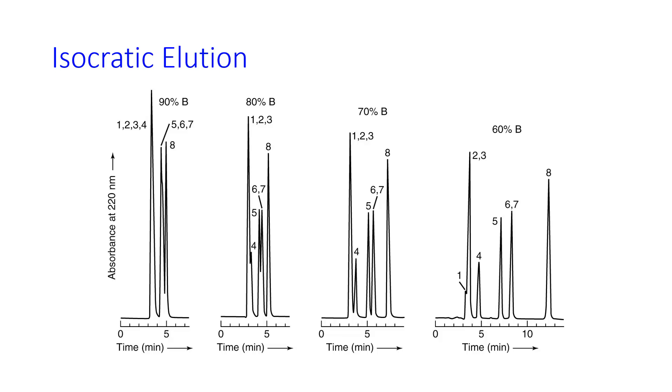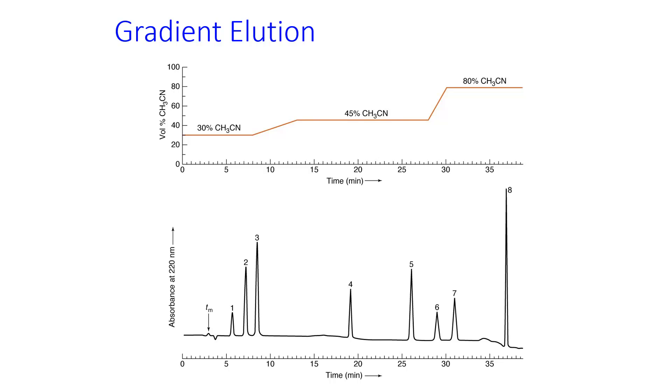In GC, we talked about solving this problem with a temperature profile. In HPLC, instead of isocratic elution, we do a gradient elution where we change the composition of the mobile phase over time. So in this case, same eight compounds, you see that peaks 2 and 3 now do not coelute anymore. They come out at different times because of the change in composition of the mobile phase.